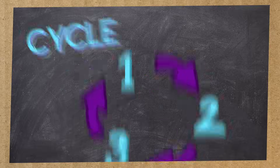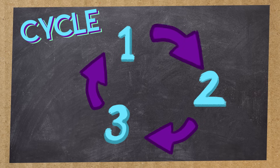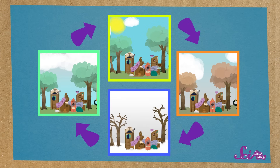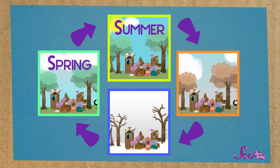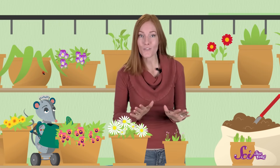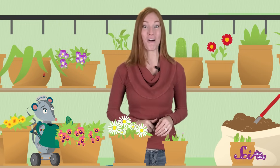A cycle is a set of steps that repeat over and over. When you get to the last step in a cycle, you go back to the beginning and go through the steps again. For example, every year there are four seasons – spring, summer, fall, and winter. And when winter's over, it's time for spring again – we go back to the beginning of the cycle. In the water cycle, all of the water on Earth goes through a set of steps that repeat over and over.